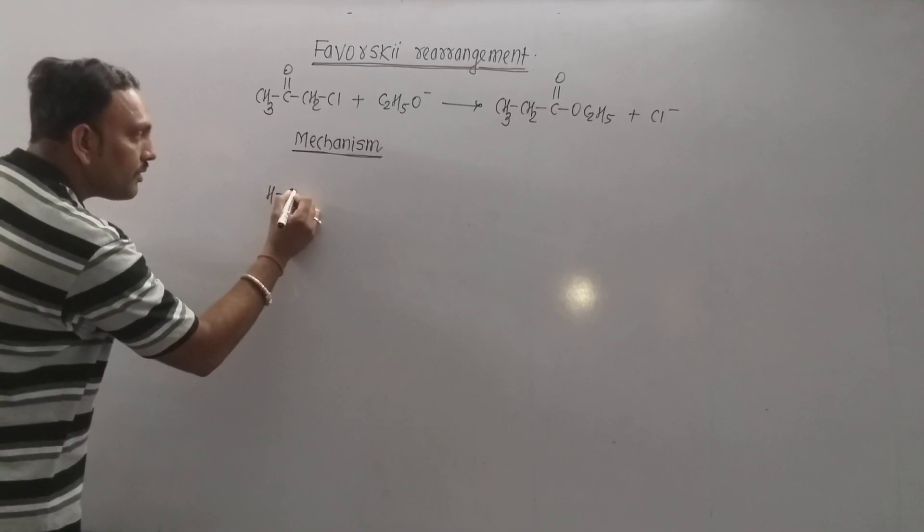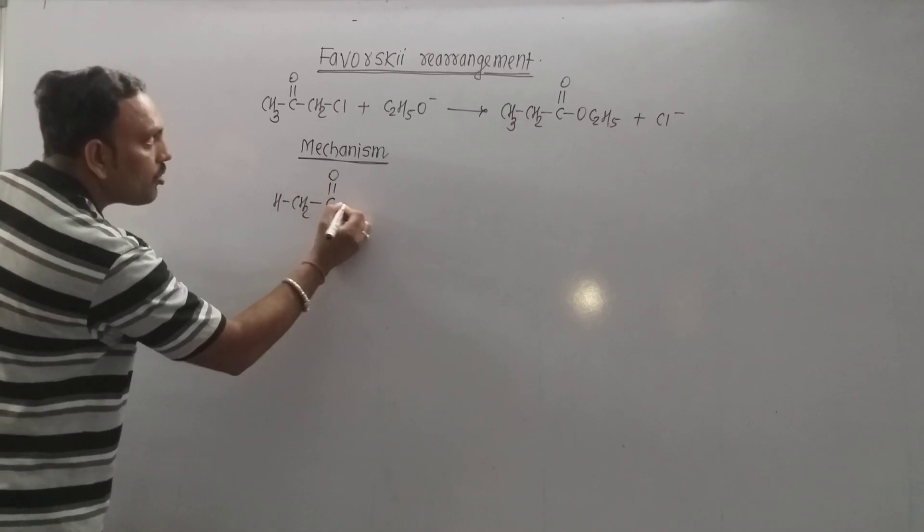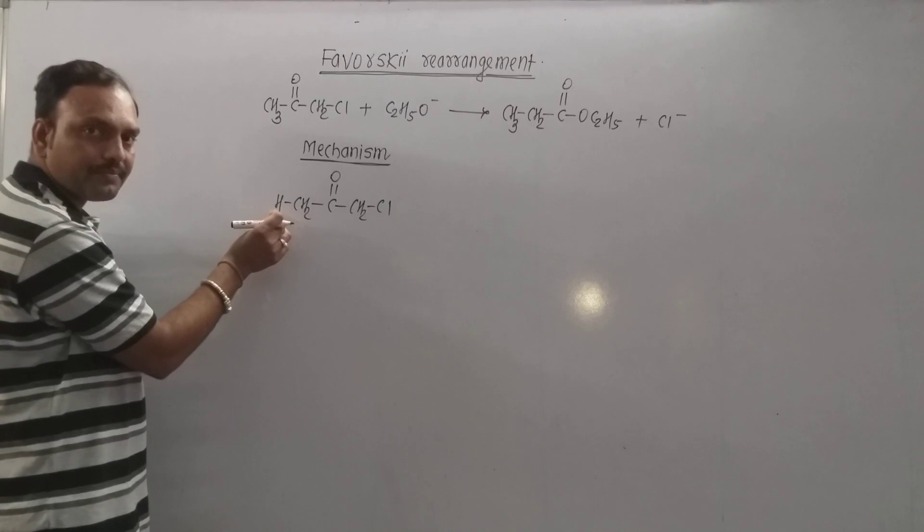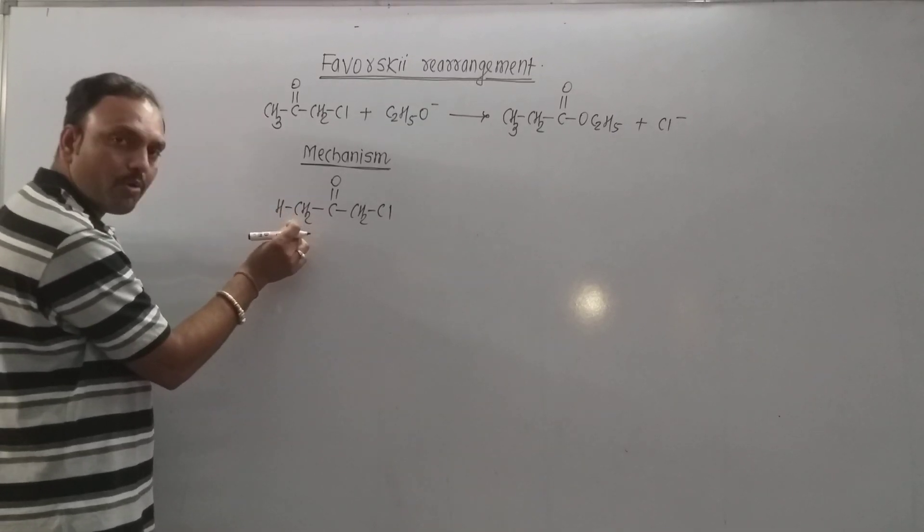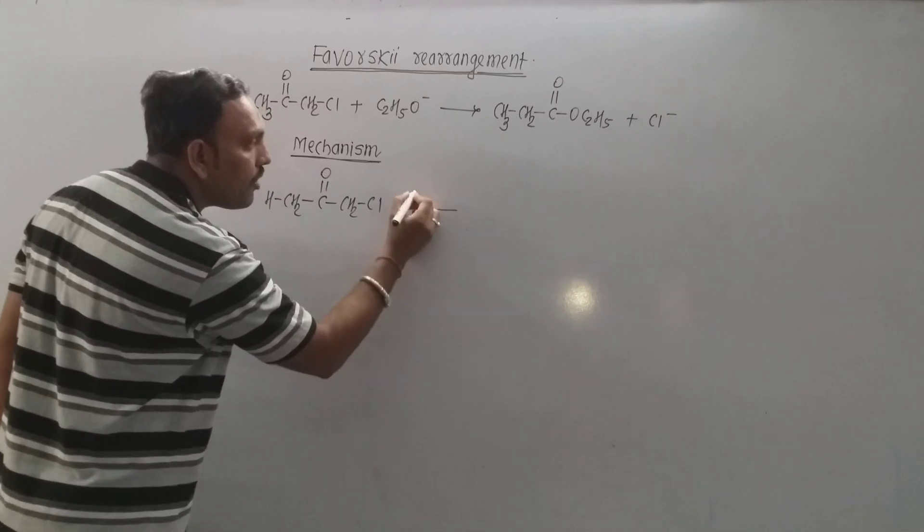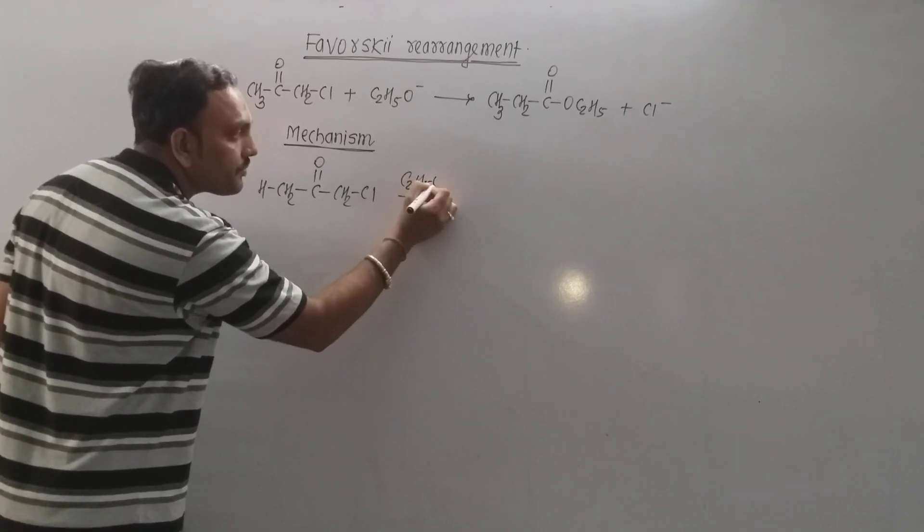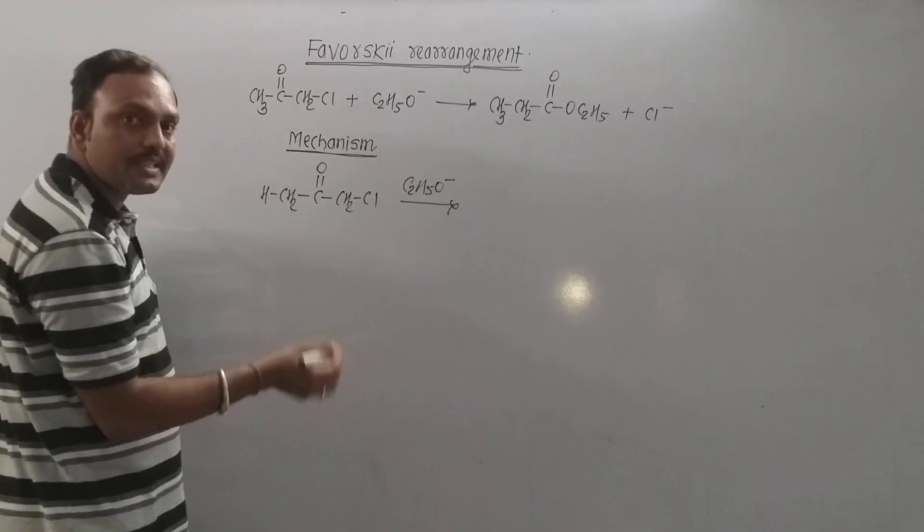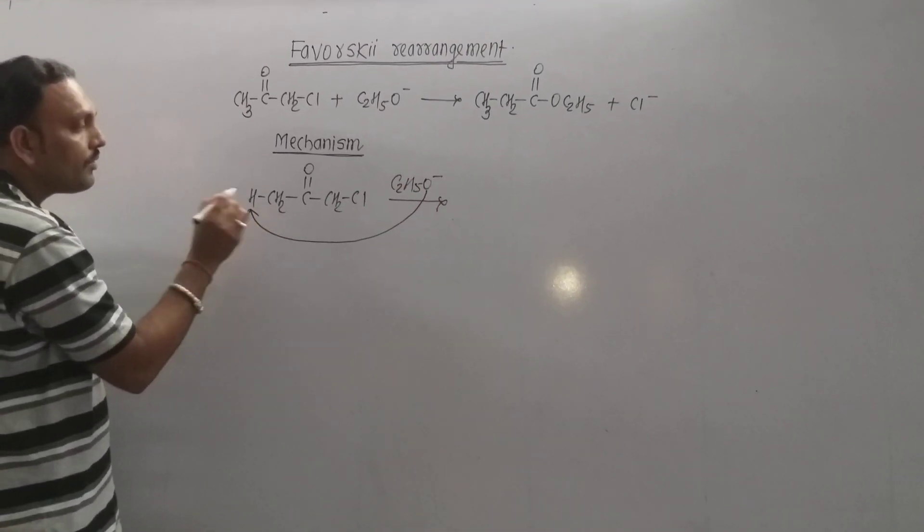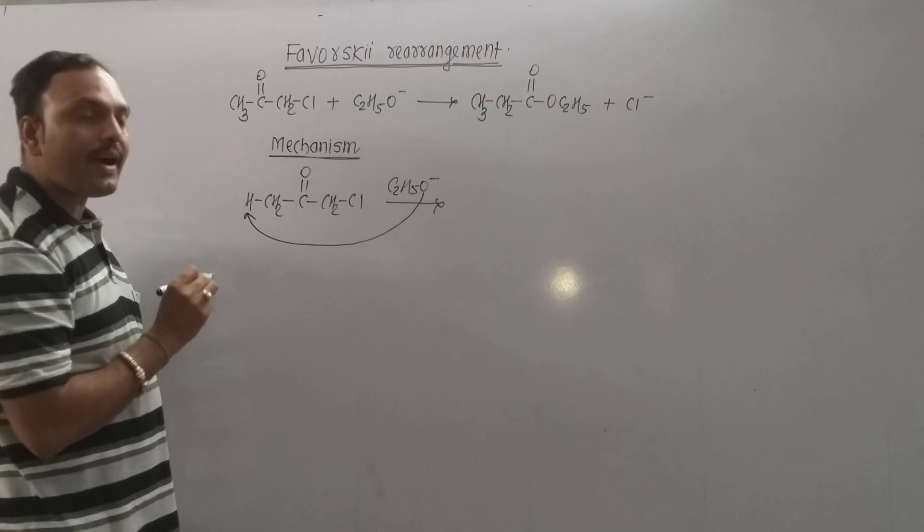this halo ketone can be written as shown. This hydrogen which happens to be alpha-hydrogen is acidic in nature. So ideally, ethoxide ion which happens to be a base removes this acidic alpha-hydrogen.